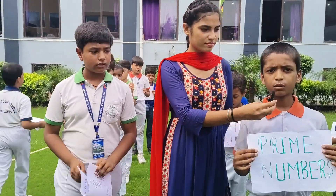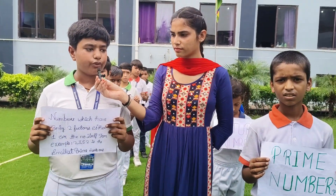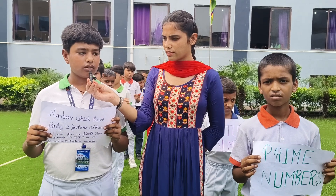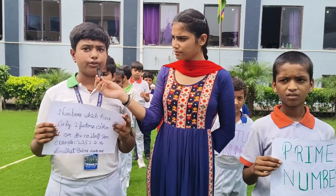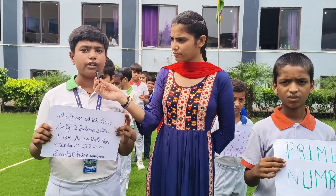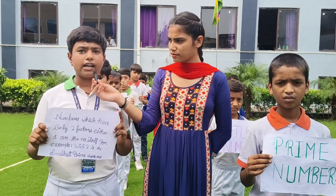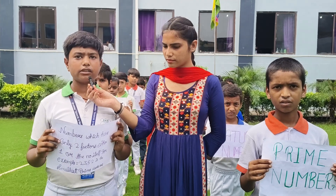Seventh is prime number. Numbers which have only 2 factors. For example, 2, 3, 5. 2 is the smallest prime number.